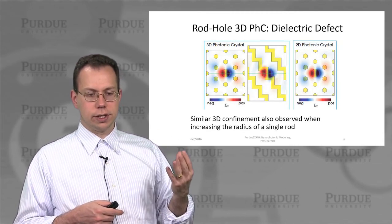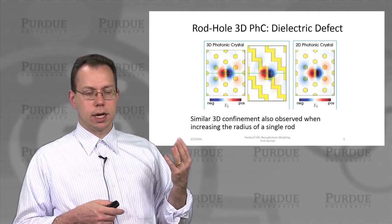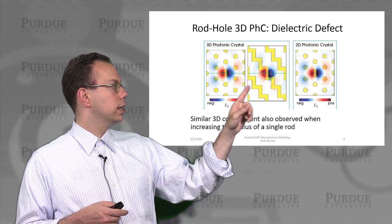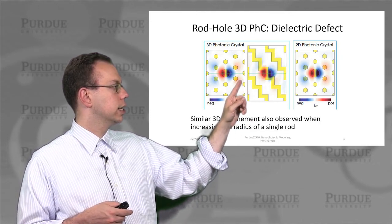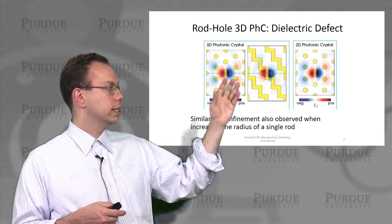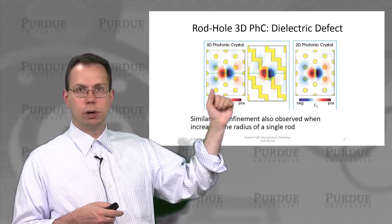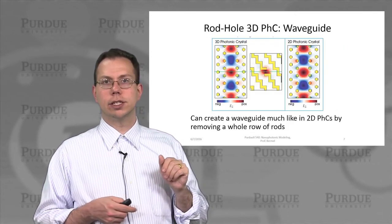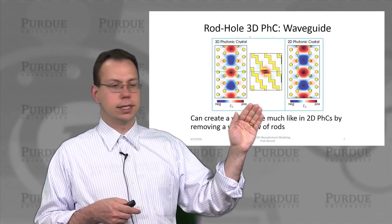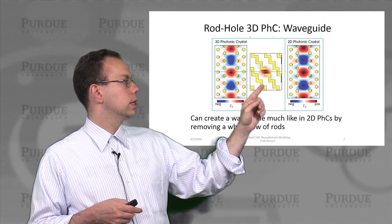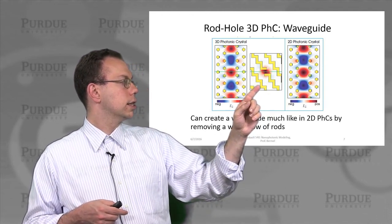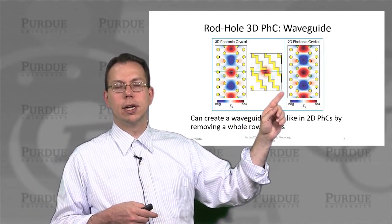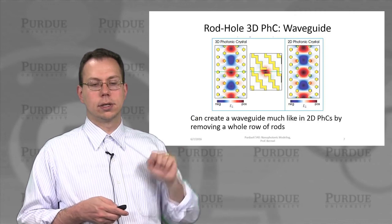You can also do something very similar by changing the rods to be bigger than before, giving a second type of mode that looks like a pi resonance with two lobes, with very similar performance. You can also remove a series of rods entirely. You can see what it looks like in the 3D photonic crystal on the left-hand side, and its performance also matches very closely with the 2D photonic crystal case.